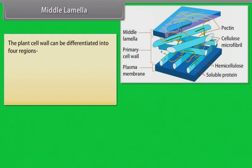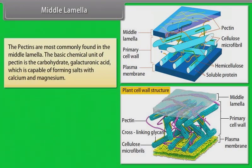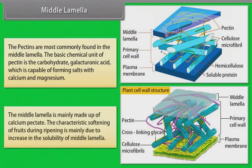The plant cell wall can be differentiated into four regions: middle lamella, primary wall, secondary wall, and tertiary wall. The outermost layer — or the intercellular structure separating the walls of two adjacent plant cells — is the middle lamella. Pectins are most commonly found in the middle lamella; the basic chemical unit of pectin is the carbohydrate galacturonic acid, which forms salts with calcium and magnesium. The middle lamella is mainly made up of calcium pectate, and the characteristic softening of fruits during ripening is mainly due to increased solubility of the middle lamella.